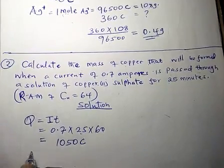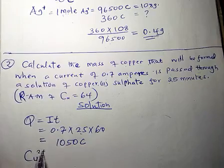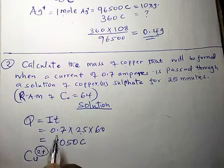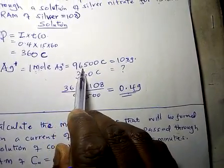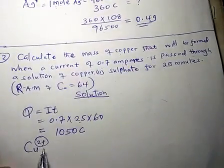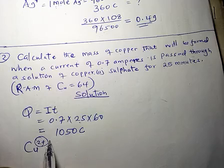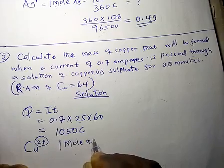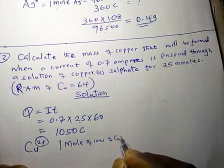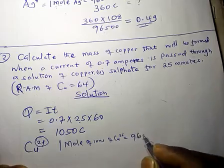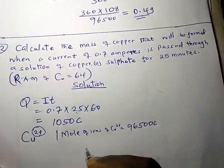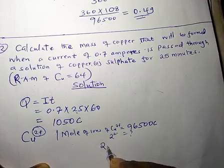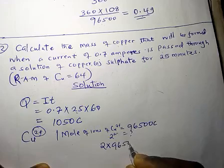Copper is Cu²⁺, so the charge is 2 positive. When the charge is 1, it contains 96,500 coulombs. If the charge is 2, then it is 2 moles of electrons. So 1 mole of copper(II) ions requires 2 times 96,500 coulombs.